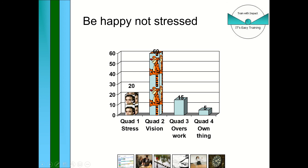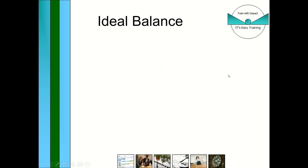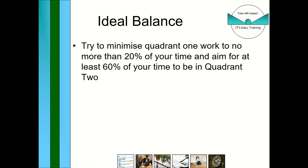You can't avoid getting into quadrant one sometimes — stress city. And we all do get distracted into quadrant three for a cup of tea and a chat — sometimes that's needed for interpersonal skills. Nobody should really be in quadrant four. The ideal balance is no more than 20 percent of your time in quadrant one and 60 percent of your time in quadrant two.